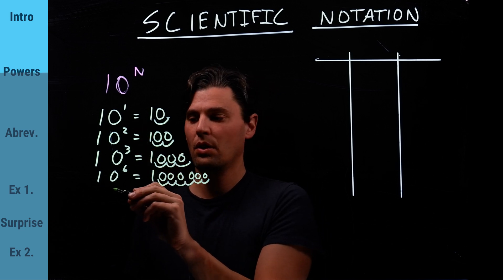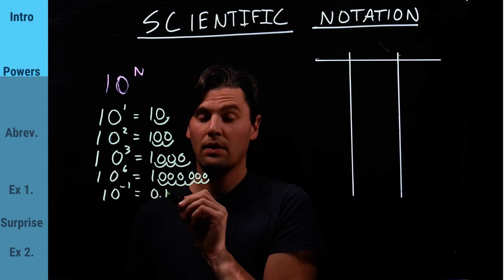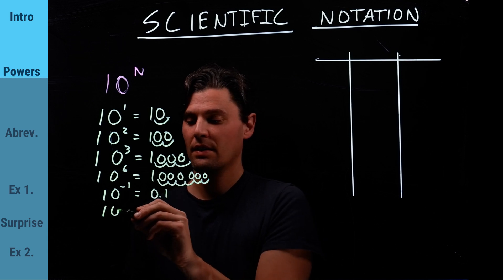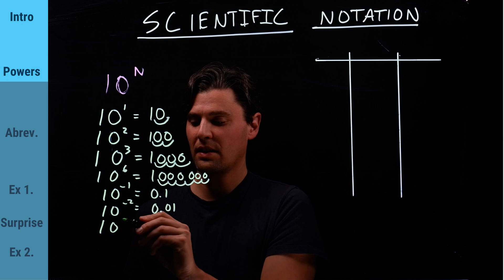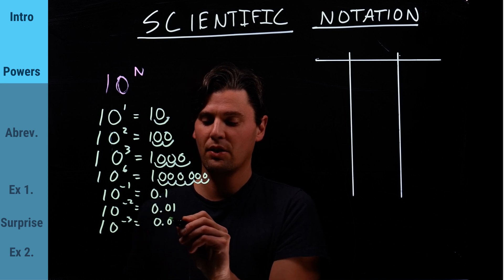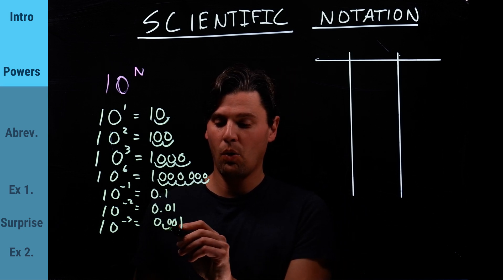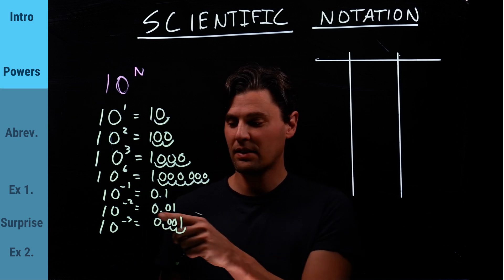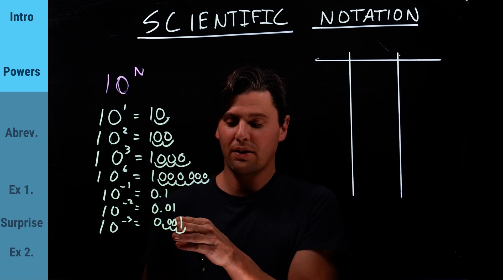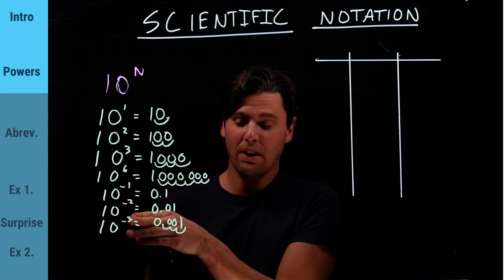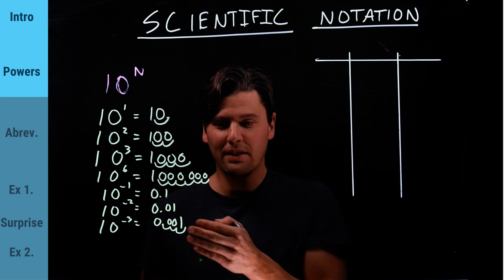The same thing if we do 10 to the minus 1, 0.1, 10 to the minus 2, 0.01, 10 to the minus 3 is 0.001. So, you get the idea here. Here, we're talking about 1, 2, 3 movements of the decimal. That's the same as the power. If it's positive, we're adding zeros behind that number. And if it's negative, if our exponent here is negative, then we have zeros in front of that one. So, at a high level, that's all scientific notation is.